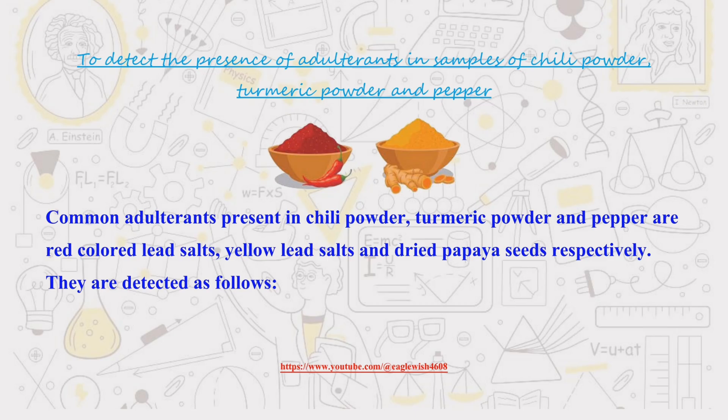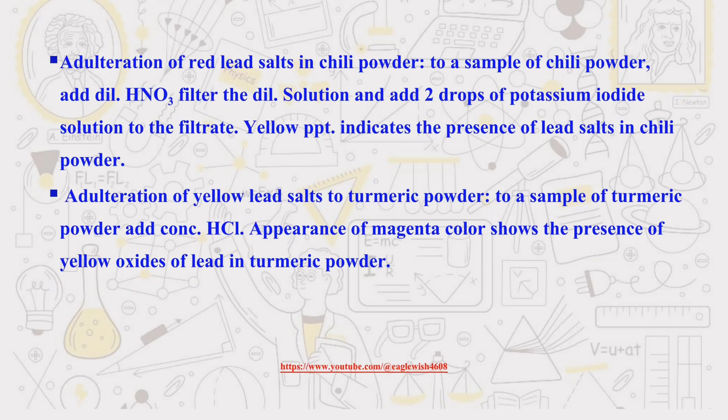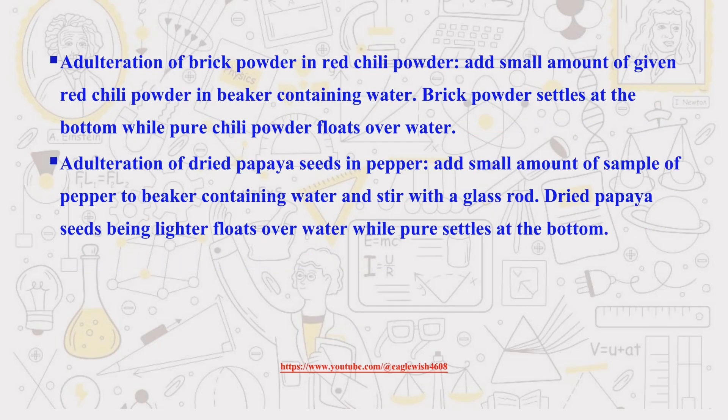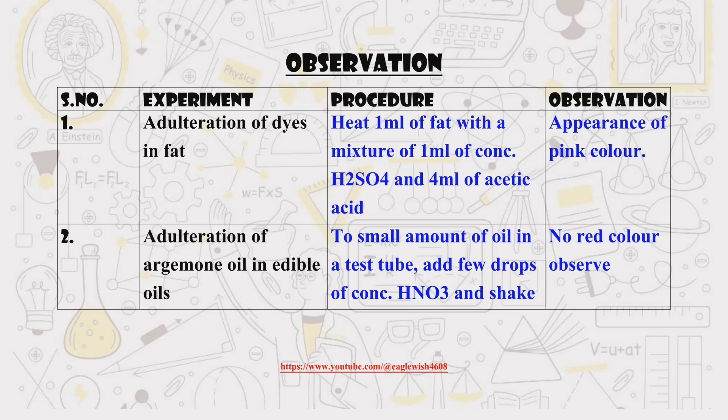Next up, we'll move on to detecting adulterants in foodstuffs such as chili powder, turmeric powder, and pepper. After conducting the tests on the above foodstuffs, we'll record the observations in a table form.